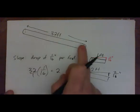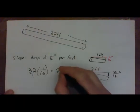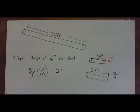So for each foot we drop 1/16th of an inch. If we've got 32 feet, we're going to drop 2 inches. So the answer is that the pipe needs to drop 2 inches.